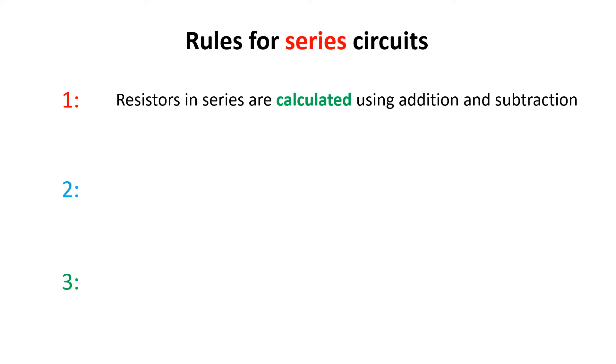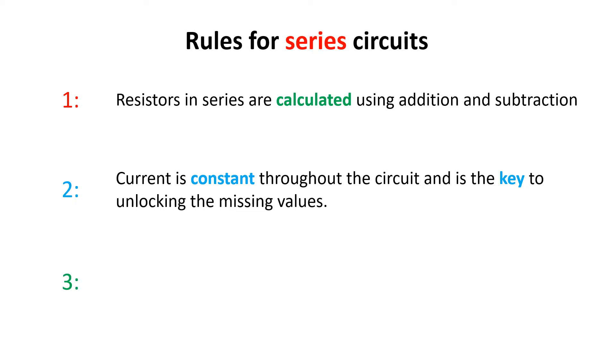Resistors in series are calculated using addition and subtraction. Current is constant throughout the circuit and is the key to unlocking the missing values, and voltage drops within a series circuit add up to equal the VT.